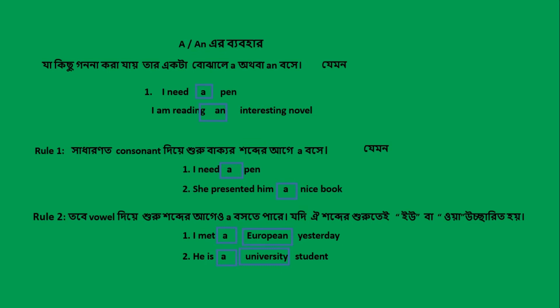ভাওয়েলের শতেও যদি তালার শব্দের উচ্চারণ vowel-এর মতো না হয়, তাহলে সেটাতে article ঠিক যেমন — এখানে একটা নাম নিও। 'State' — I am from this state. এখানে 'state' শব্দের উচ্চারণ — S-T-A-T-E।